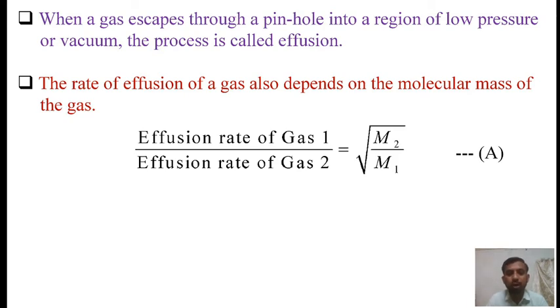Graham's law when applied to effusion of a gas is called Graham's law of effusion, which is mathematically expressed by expression A at constant temperature and pressure: the ratio of effusion rate of gas 1 and effusion rate of gas 2 equals square root of M2 upon M1.